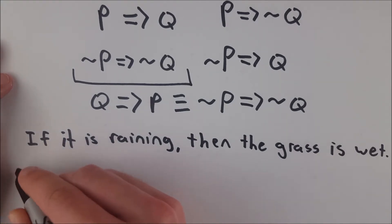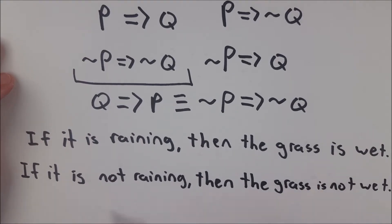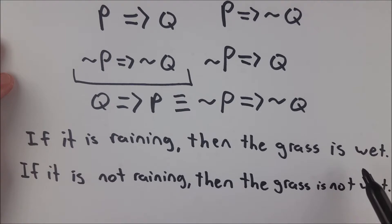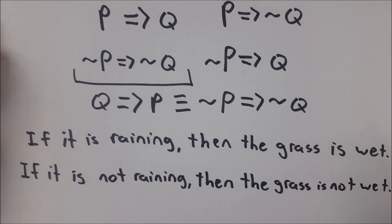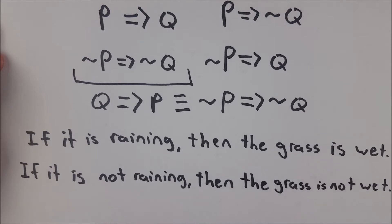So I'll write that out real quick. So here's the inverse. If it is not raining, then the grass is not wet. Now, the original statement, of course, is essentially true. If it's raining in the location that you're in, then the grass in the location that you're in is going to be wet. The grass that isn't covered up by stuff, obviously.